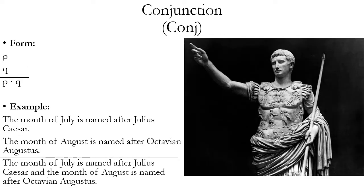Another implication rule is conjunction, abbreviated conj or C-O-N-J. The form is you have two propositions on separate lines of your proof — P and Q, for example. This rule allows you to take those two propositions and join them with a dot or conjunction in between. Intuitively, if you know each of those propositions is true separately, you can also say they're both true together.